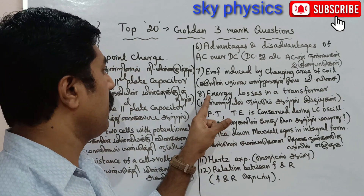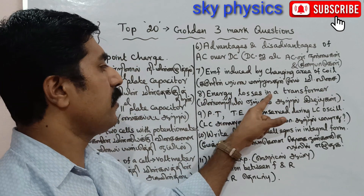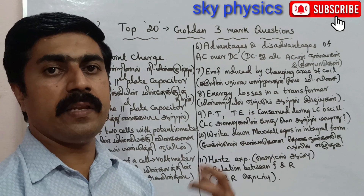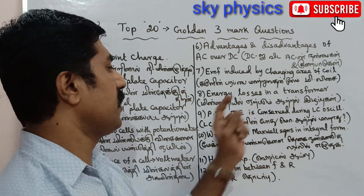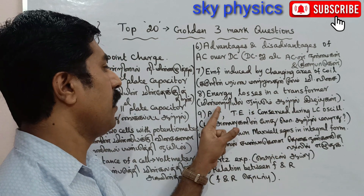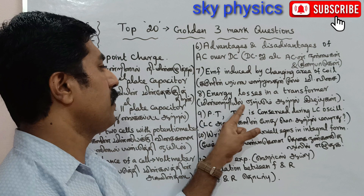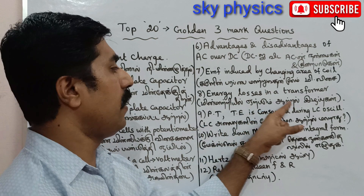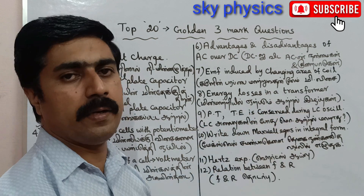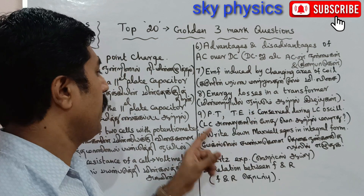Question number 8: Energy losses in a transformer — various energy losses in a transformer. (Tamil: Minnmattil Air Paddle — Artel Ilapkukal.)